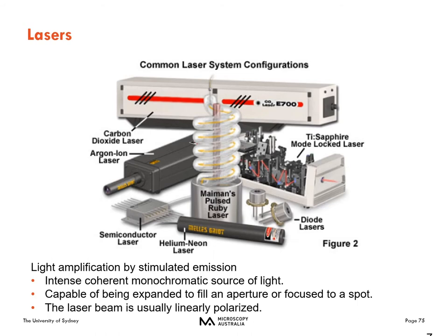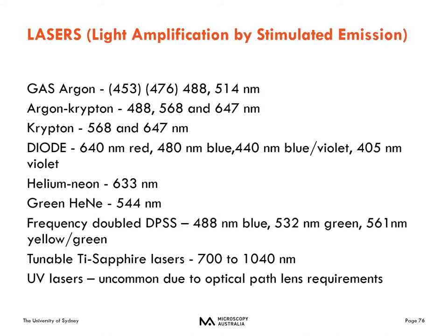Laser beams are typically linearly polarized, but I'm not going to spend much time on that. What are some typical lasers available? For example, the gas argon laser has multiple laser lines — typically people use the 488 and 514, and occasionally the 453 and 476. There's an argon krypton laser, just the krypton laser. More and more common now are single wavelength diode lasers: a 440, 480, 640, or a 405 for your DAPI probes. The helium neon for farther red probes — the 633 line.